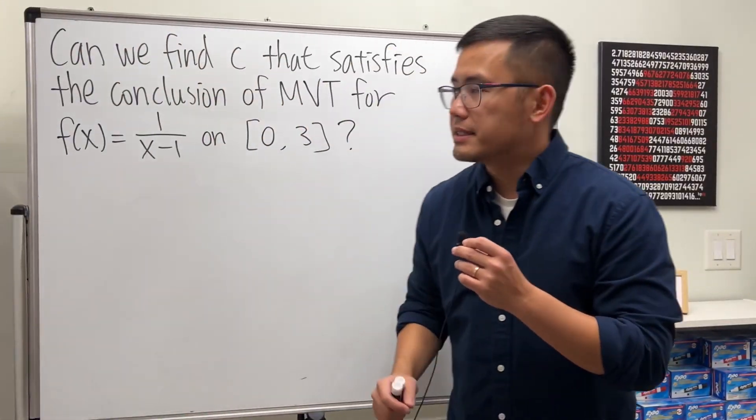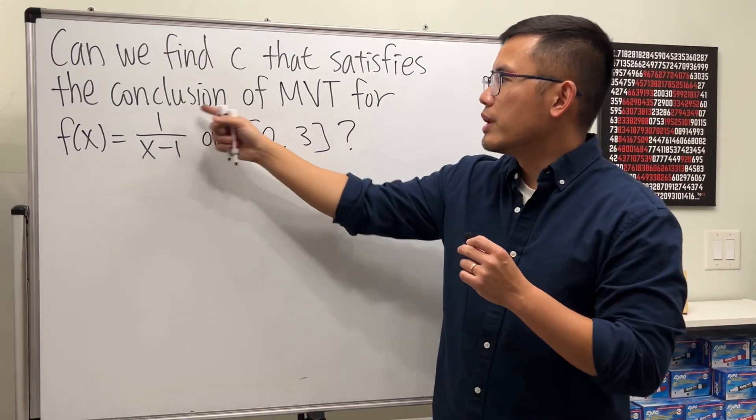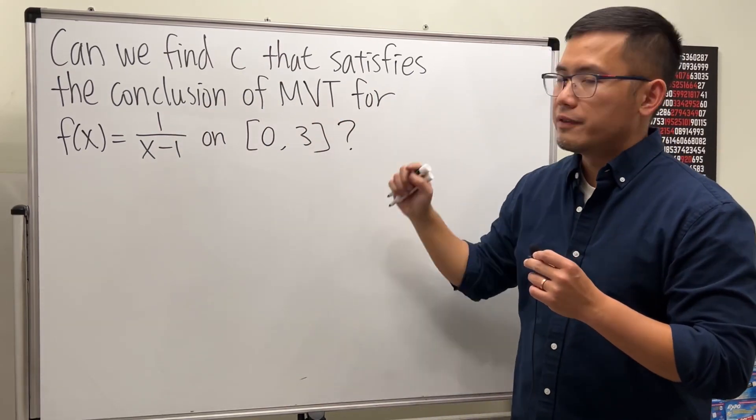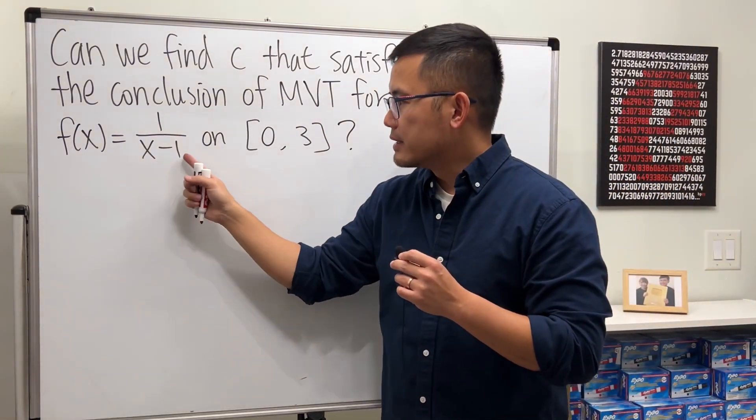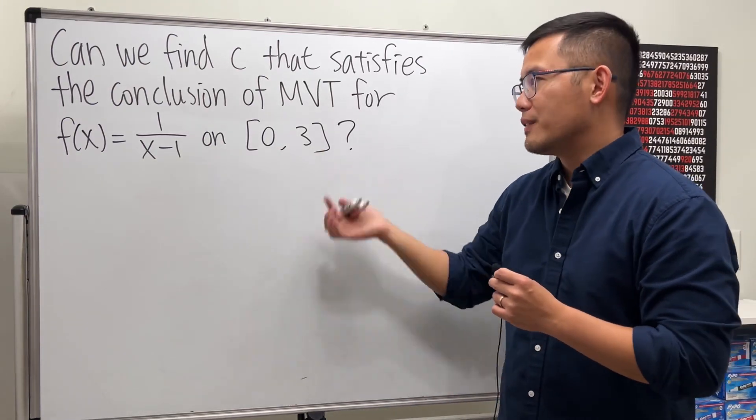Okay, here's a question for you guys. Can we find a c value that satisfies the conclusion of the mean value theorem for the function 1 over x minus 1 on the interval 0 comma 3? Well, let's find out.